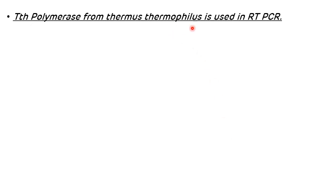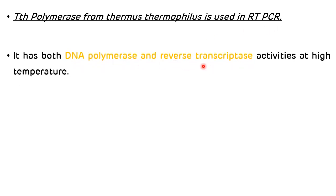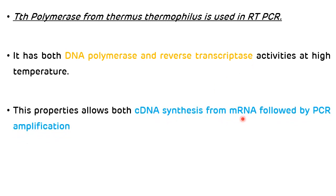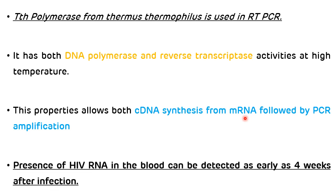The polymerase from Thermus thermophilus is used in RT-PCR. This enzyme has both DNA polymerase as well as reverse transcriptase activities, which allows both cDNA synthesis from messenger RNA followed by PCR amplification. In ordinary PCR, DNA is detected and that DNA could be from a living or non-living organism, but in reverse transcriptase PCR, messenger RNA is detected, meaning it is derived from a living organism. The presence of HIV RNA in blood can be detected as early as four weeks after infection by RT-PCR.